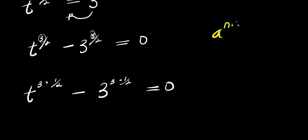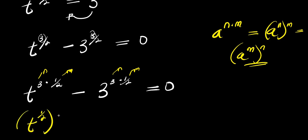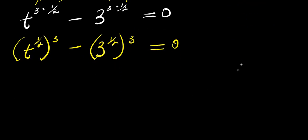Remember if you have a to the power n times m, this equals a to the power n raised to the power m. We apply this identity — this is our n and this is our m — so that means I'm going to have t to the power one over two, raised to the power of three, minus three to the power one over two, raised to the power of three, which equals zero. And don't forget that a to the power one over two equals square root of a.